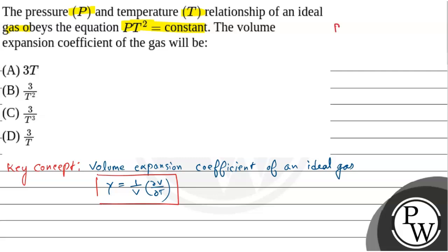In the question, we have PT² equals constant. Now, this is an ideal gas. For ideal gas, what happens? PV equals nRT. So P is nRT by V.